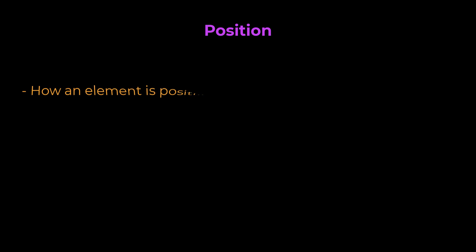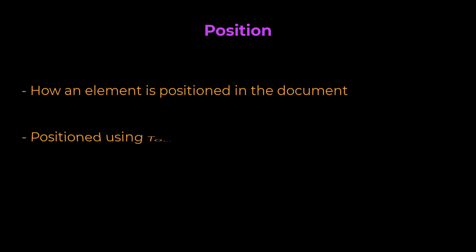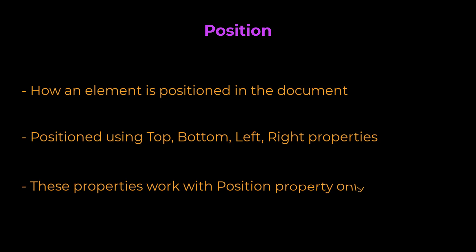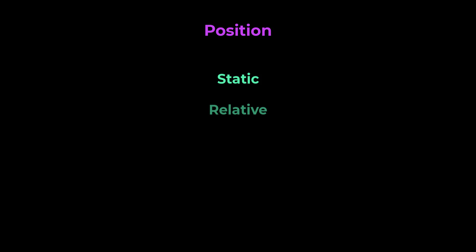The Position CSS property sets how an element is positioned in a document. Elements are positioned using the top, bottom, left, and right properties. However, these properties will not work unless the Position property is set first. For the Position property, we can give five different values: Static, Relative, Absolute, Fixed, and Sticky.